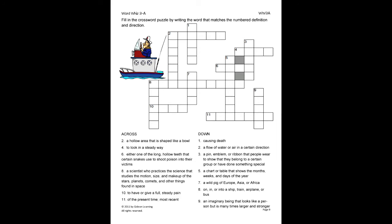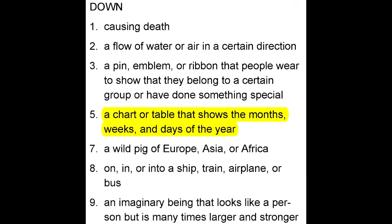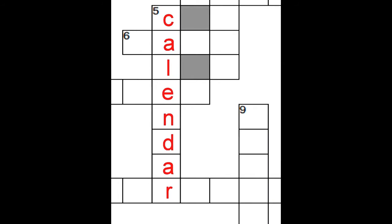On this activity, the student will fill in the crossword puzzle by writing the word that matches the number definition. Let's do number five together as an example. Underneath the down column, number five says, a chart or table that shows the months, weeks, and days of the year. Since we know this is the definition for calendar, we will find five down and neatly write calendar.